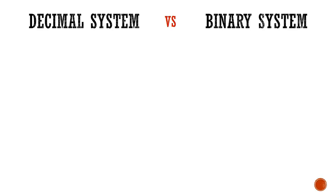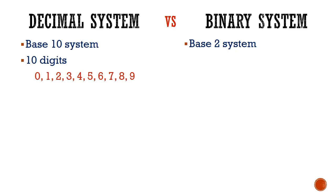Decimal system is also known as base 10 system whereas the binary system is known as base 2 system. We use 10 digits to express any number in decimal system, these digits are 0, 1, 2, 3, 4 up to 9.